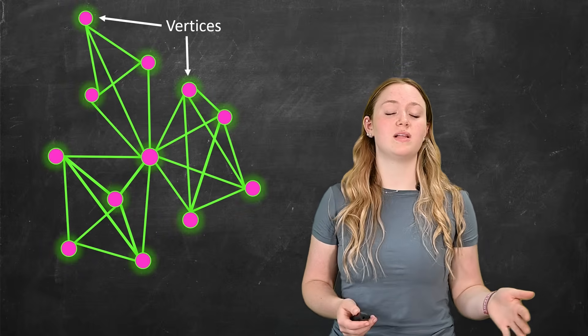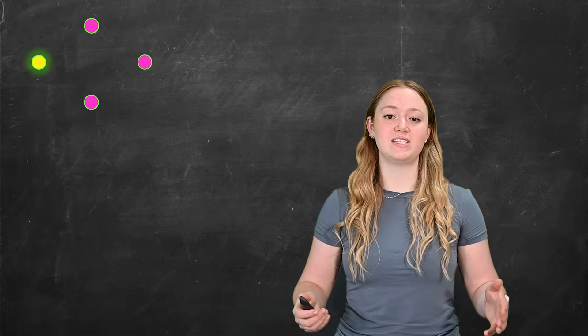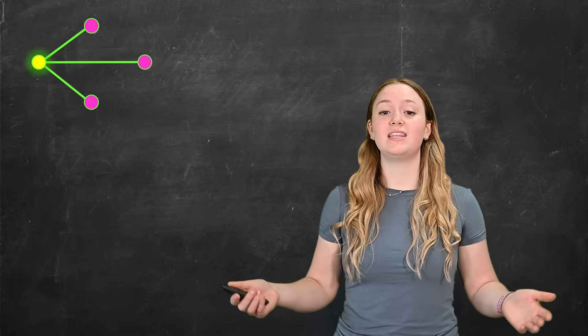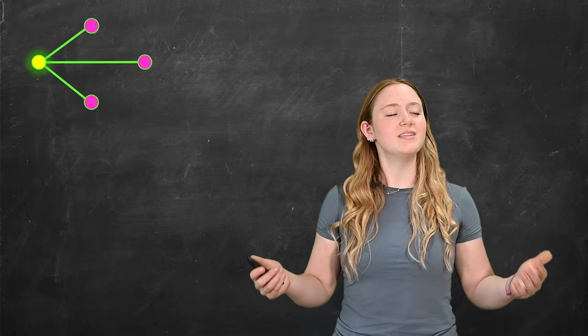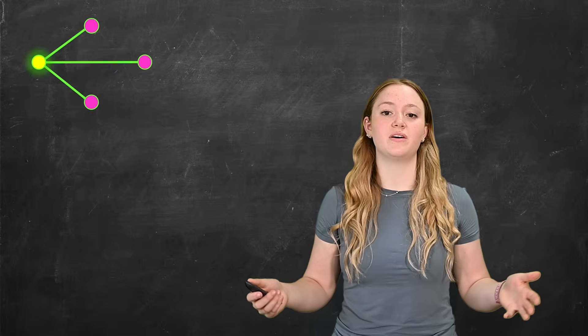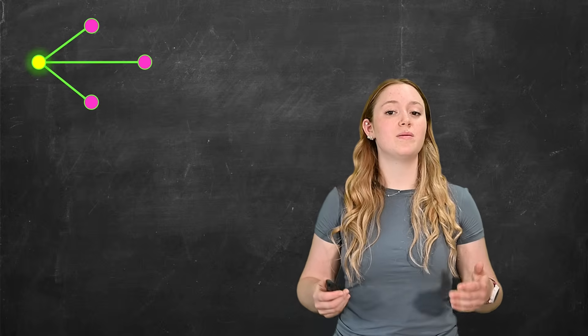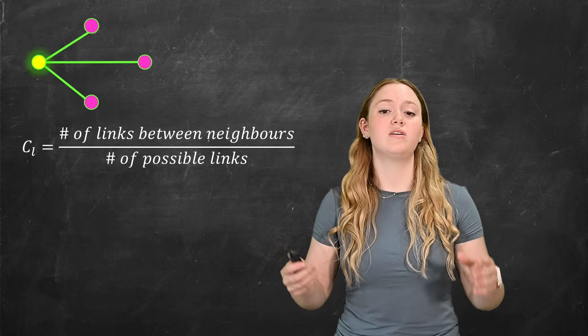We'll start by looking at the local clustering coefficient. The local clustering coefficient focuses on one vertex and it quantifies how close its neighbors are to being a clique. In this case, the vertex has three neighbors. So let's look at how we calculate the local clustering coefficient, or cl. We calculate it by dividing the number of links between the neighbors by the number of possible links that could occur between them.